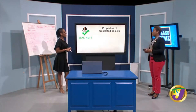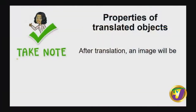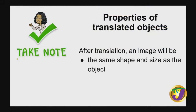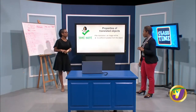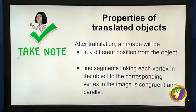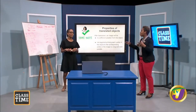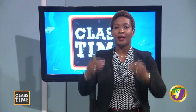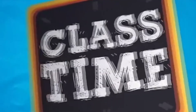Let's recap the properties of translated objects. First, after translation, an image will be the same shape and size as the object. Second, it will have the same orientation as the object. Third, after translation, an image will be in a different position from the object. And line segments linking each vertex in the object to the corresponding vertex in the image are congruent and parallel — meaning the points are the same distance apart and the lines connecting them are parallel. That's all we have for today — we'll see you next time!